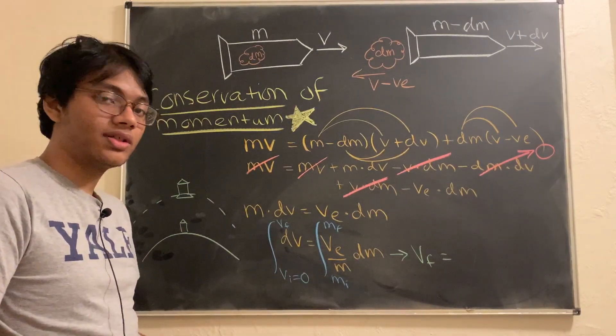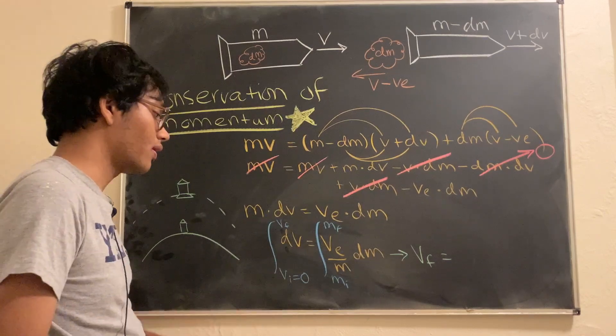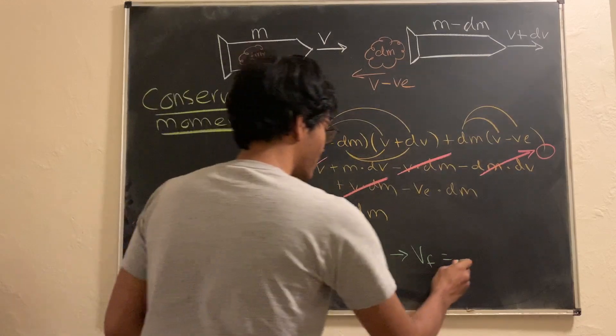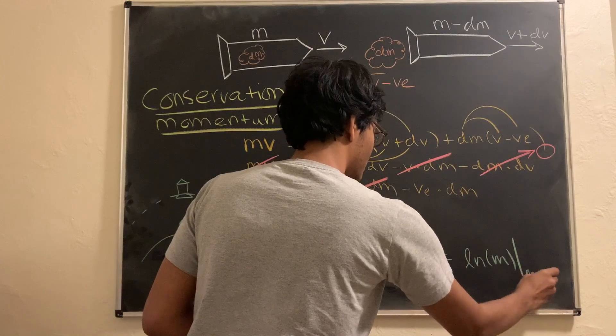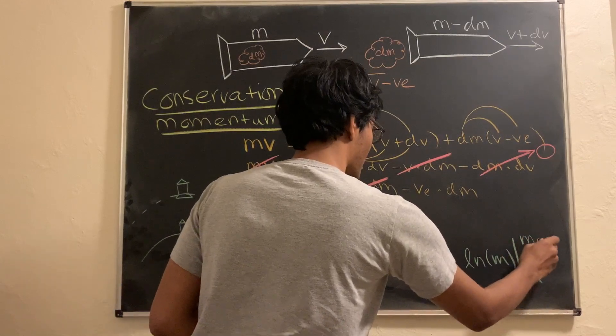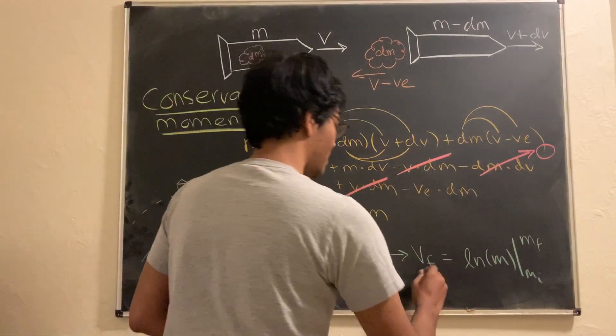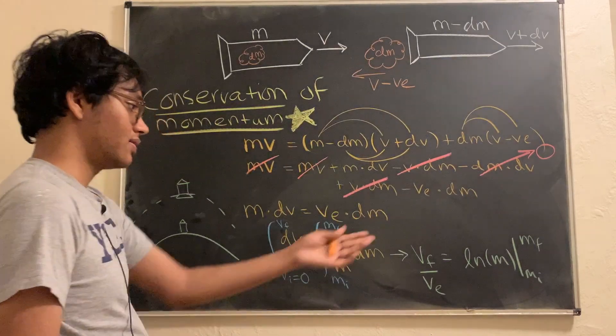On the right hand side, 1 over M if you integrate that. Well, that's just the natural log or just log of M, right? So, we're going to have what? We're going to have log of M from M sub i to M sub f. And multiply that by V sub e or I can go ahead and bring V sub e to the other side.